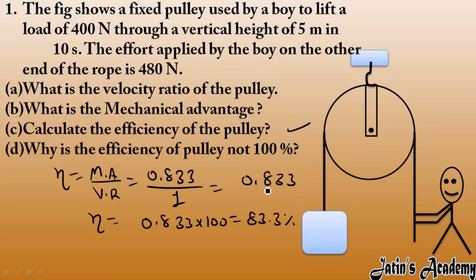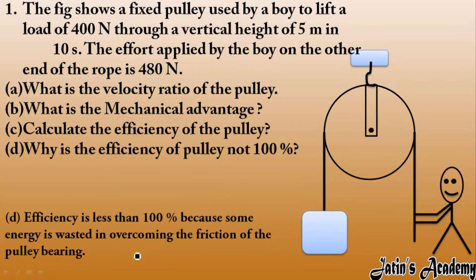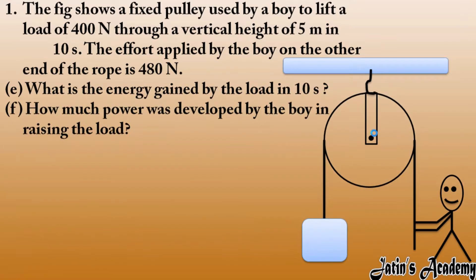The question arises: why is efficiency not 100 percent? Efficiency is not 100 percent because some part of energy is wasted in overcoming friction between the pulley and the bearing. A frictional force is present, and to overcome that friction some energy is lost.